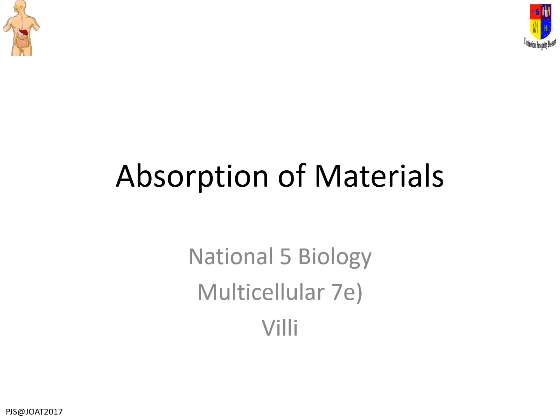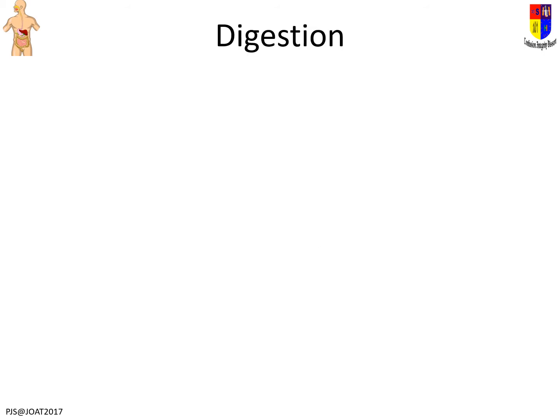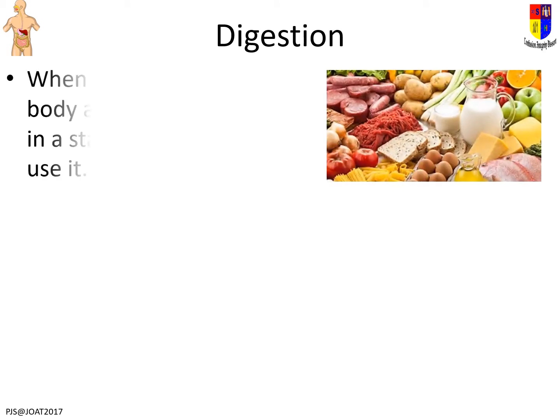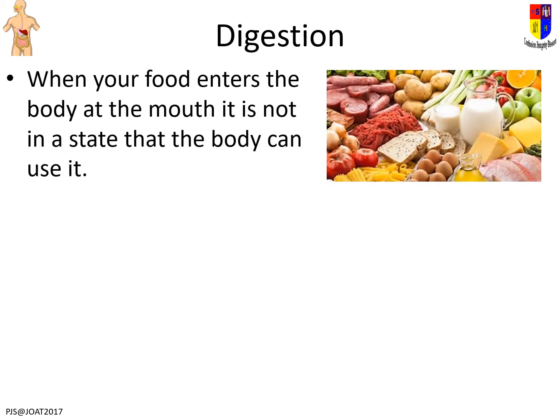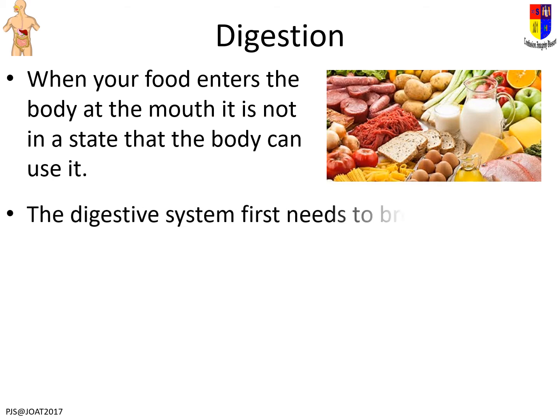We are looking at the second surface for exchange: the villus, and how you absorb materials from it. Digestion is you using the food that comes into your body and breaking it down to a position where you can actually absorb it into your bloodstream. Until you do that, the food you've eaten has not actually done you much good at all, because you haven't actually absorbed it.